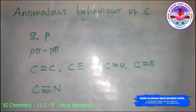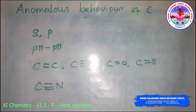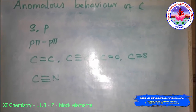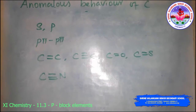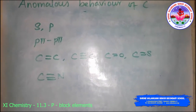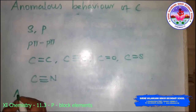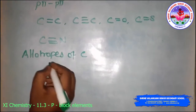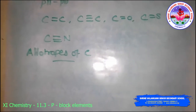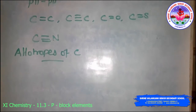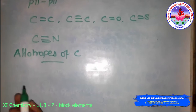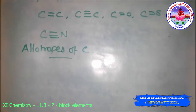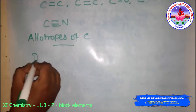Carbon has catenation properties, and along with p-pi to p-pi bond formation, it shows allotropy. Carbon exists in many allotropic forms, both crystalline and amorphous. Diamond and graphite are the well-known allotropes of carbon, and another form is called fullerene.